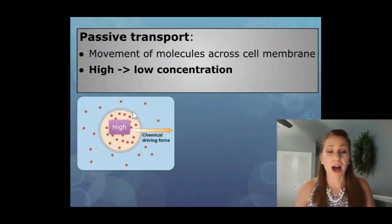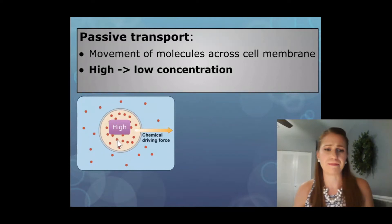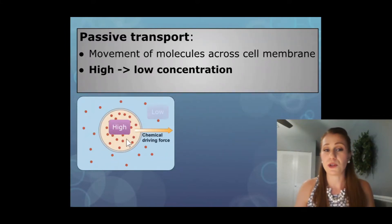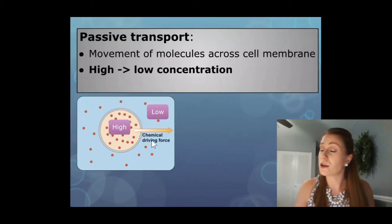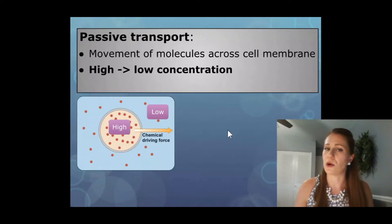That's what we see here in this picture. We have a high concentration of molecules — the red molecules. They can be glucose, sodium, potassium, or even water. What they're doing is moving from an area of high concentration to an area of low concentration. The chemical driving force here is showing you what direction those molecules will be moving — from inside the cell to the outside of the cell, from high to low concentration.